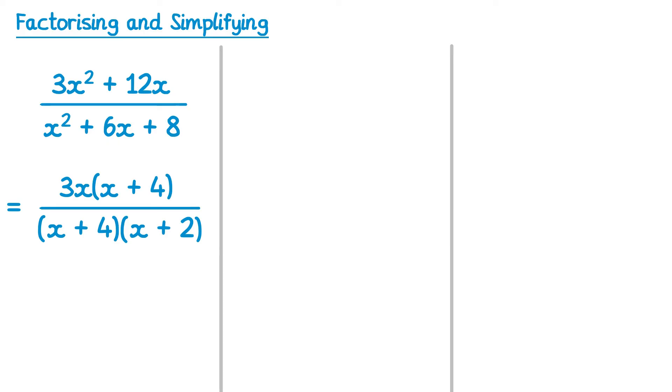We now have common factors of x + 4 on the top and bottom, so we can cancel these, and this would simplify to give 3x/(x + 2).